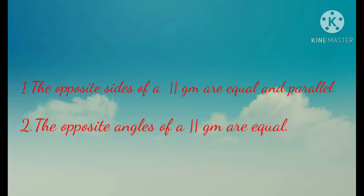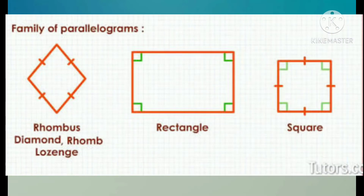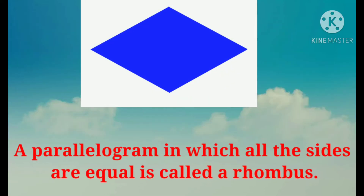A parallelogram is further divided into three different types named rhombus, rectangle, and square. A rhombus is a parallelogram in which all the sides are equal.